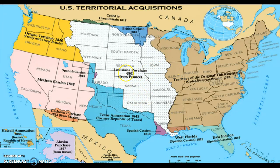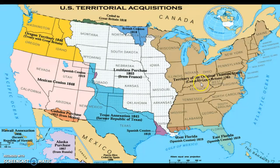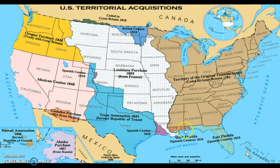This map shows all the places that America gathered since its founding. The brown on the right is the original territory of the 13 colonies — essentially ceded by Great Britain by 1783. We started out with just this right half, but then slowly started adding other territory. We added Florida — West Florida and East Florida — the one that comes down, which was ceded by the Spanish in 1819.